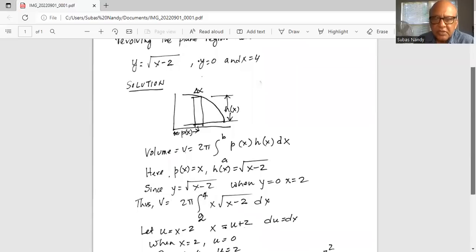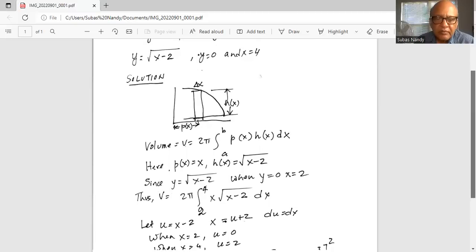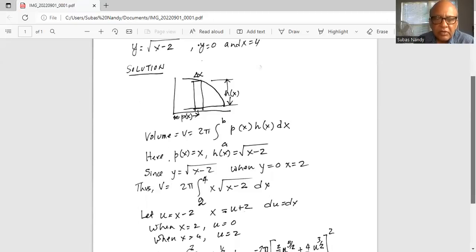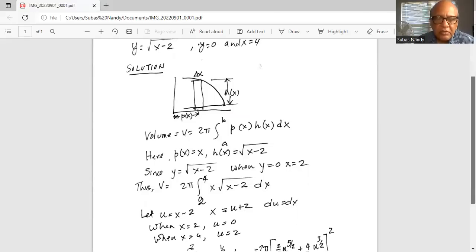Now we do some substitution that u equal to x minus 2 or x is equal to u plus 2. So du is equal to dx. When x is equal to 2, u is equal to 0 and when x is equal to 4, u is equal to 2.